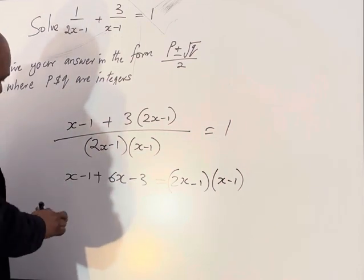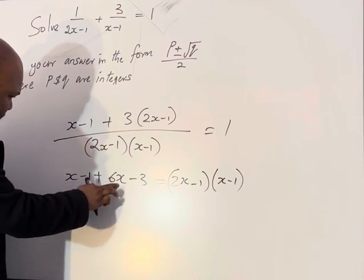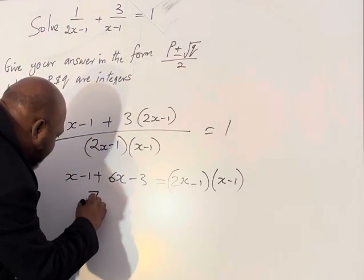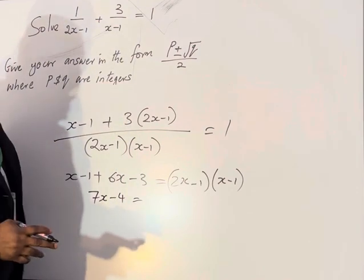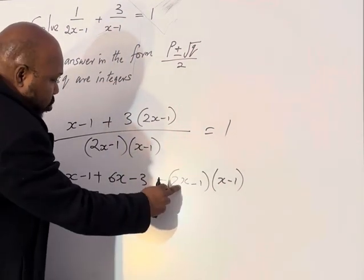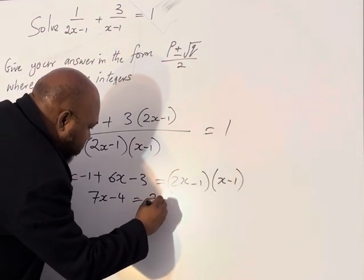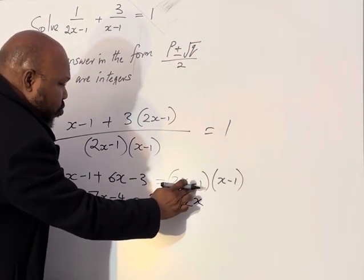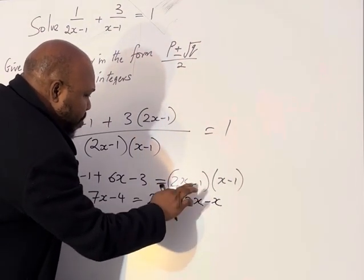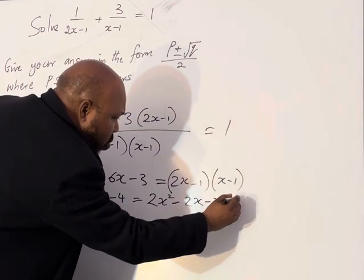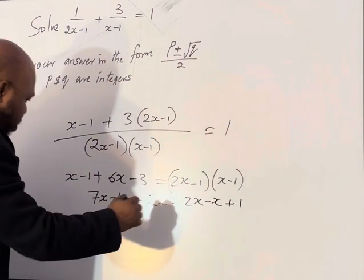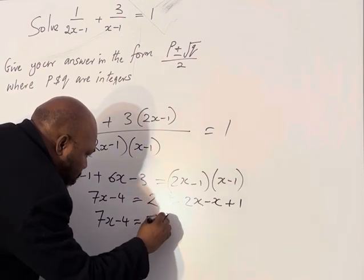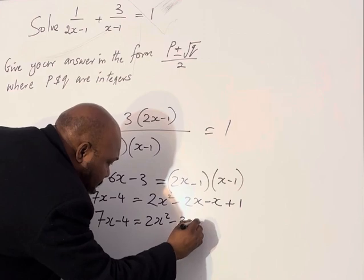Let's collect like terms on the left hand side: 1 plus 6 is 7, minus 1 minus 3 is minus 4, so we have 7x - 4 equals. Let's expand this bracket: 2x multiplied by x is 2x², 2x multiplied by minus 1 is minus 2x, minus 1 multiplied by minus 1 is plus 1.